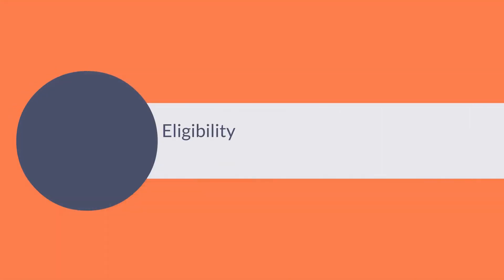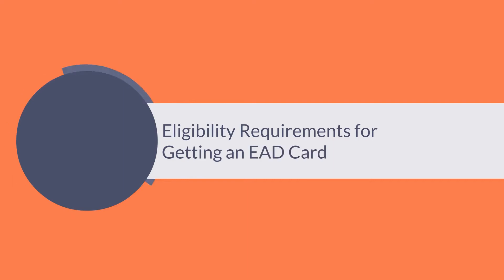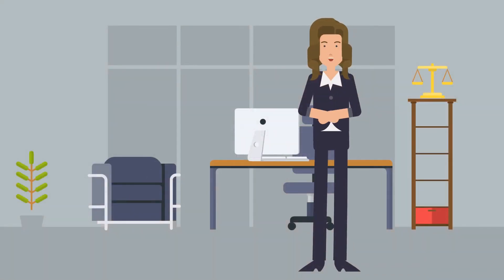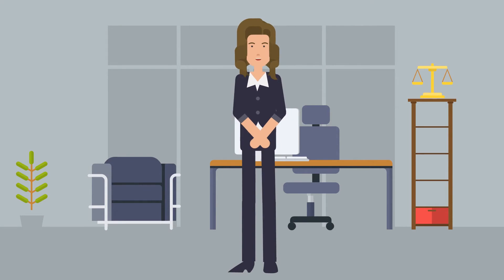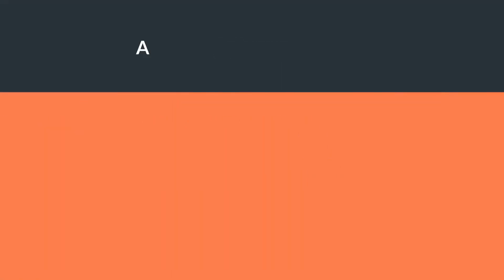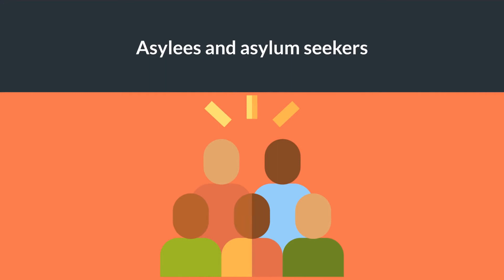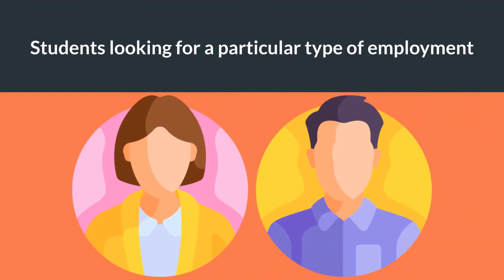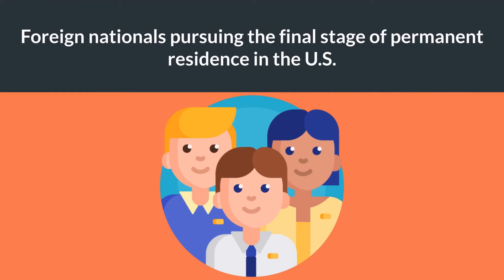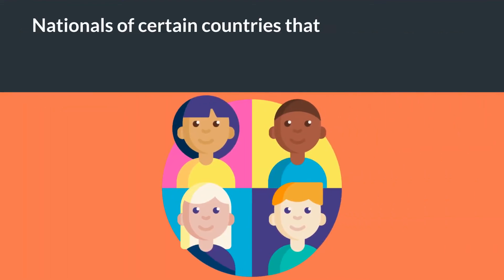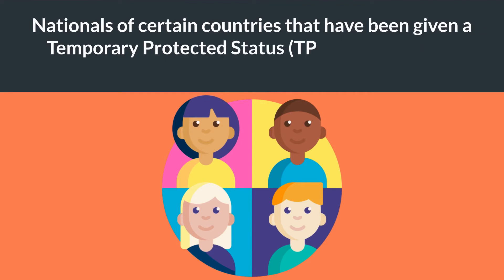Eligibility requirements for getting an EAD card: In addition to offering proof of identity documents, like a birth certificate, you also need to belong to one of the eligible categories of foreign workers in order to apply for an EAD. These include refugees, asylees and asylum seekers, students looking for a particular type of employment, foreign nationals pursuing the final stage of permanent residence in the US, and nationals of certain countries that have been given a temporary protected status (TPS) due to specific conditions in their home countries.